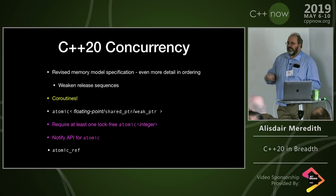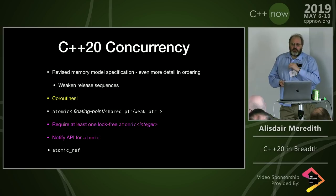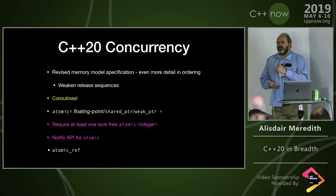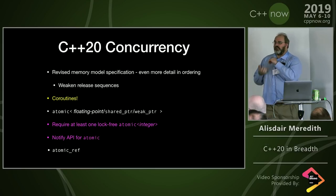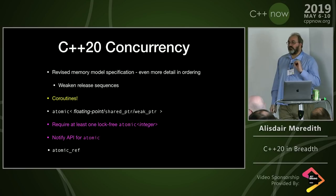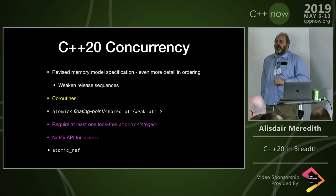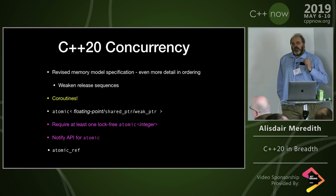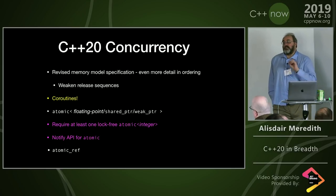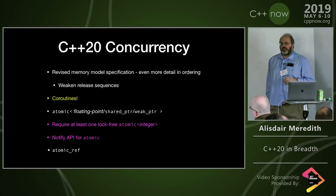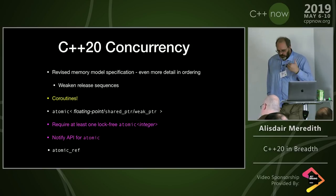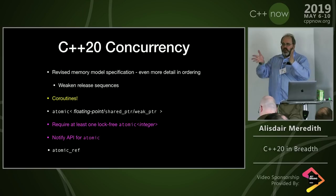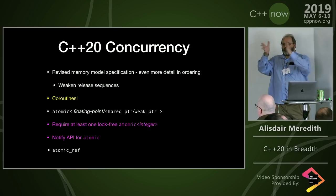We're also going to require — not yet landed, in the pipeline for Cologne — that on any hosted implementation there will be at least one lock-free atomic integral type. You can guarantee your architecture supports at least one lock-free atomic type. This requirement is optional for freestanding implementations, but for the vast majority of us we can assume lock-free atomics are available, with typedefs indicating the most performant lock-free integral type.